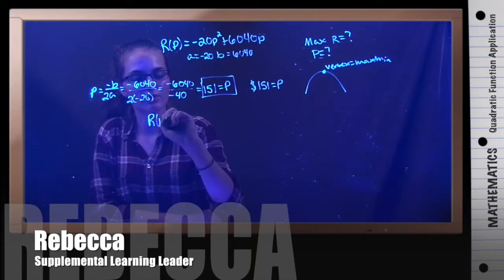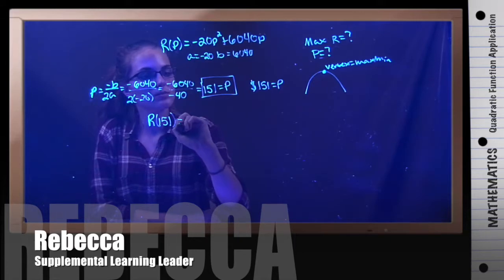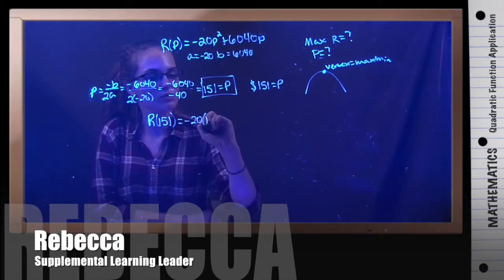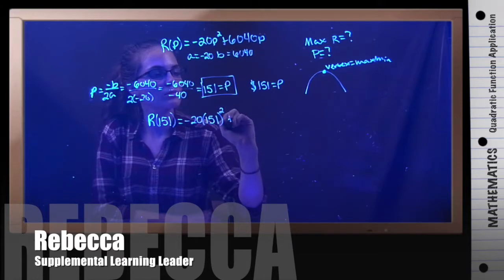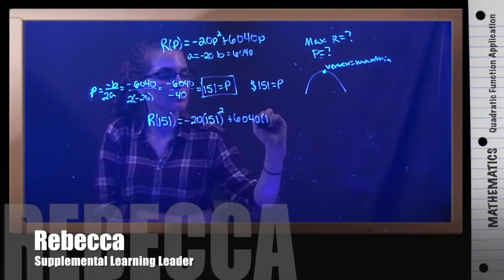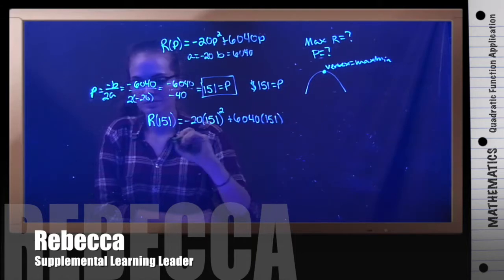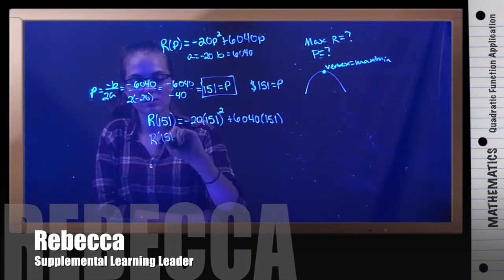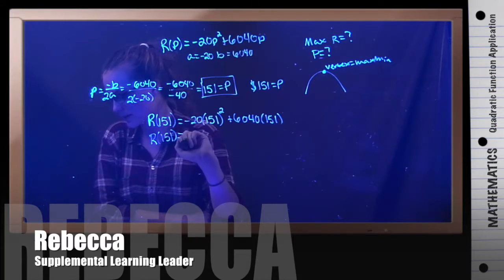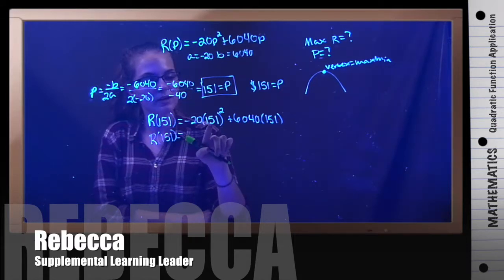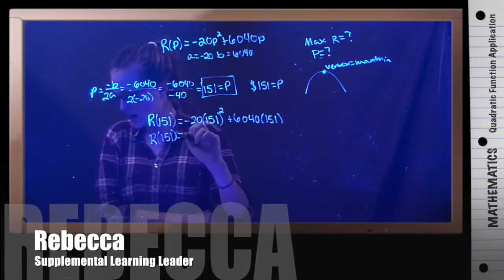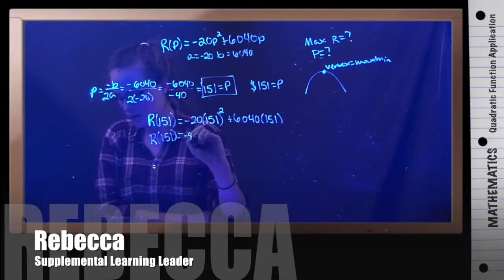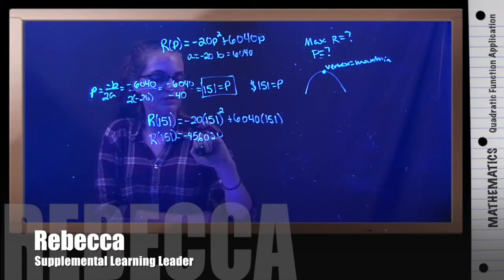Revenue at 151 is going to be equal to negative 20 times 151 squared plus 6040 times 151. Now we're going to simplify everything and combine like terms. When I simplify this entire term, 151 squared times negative 20, I get negative 456,020.